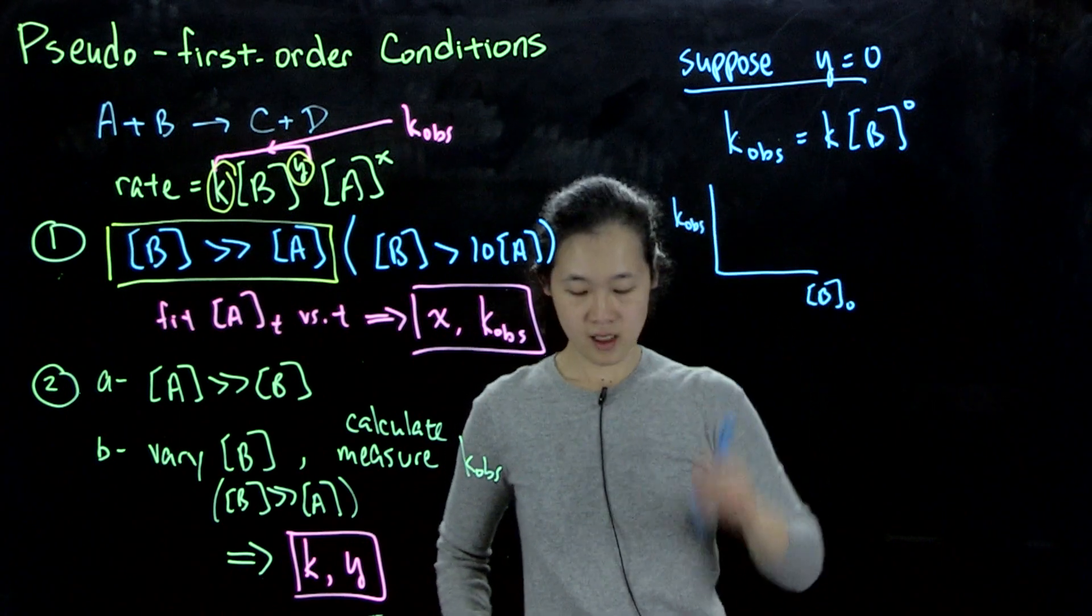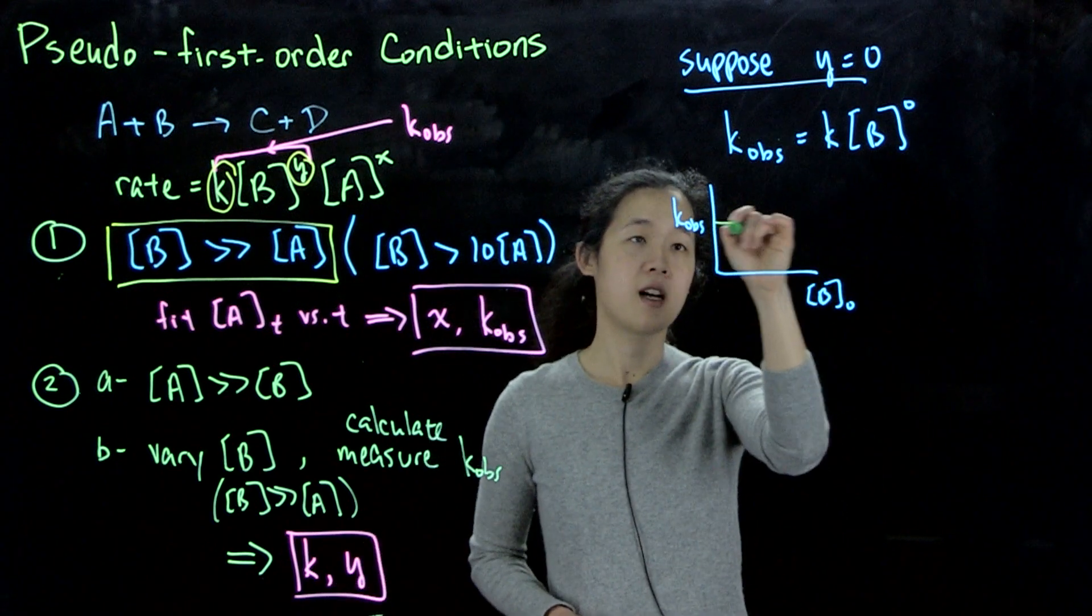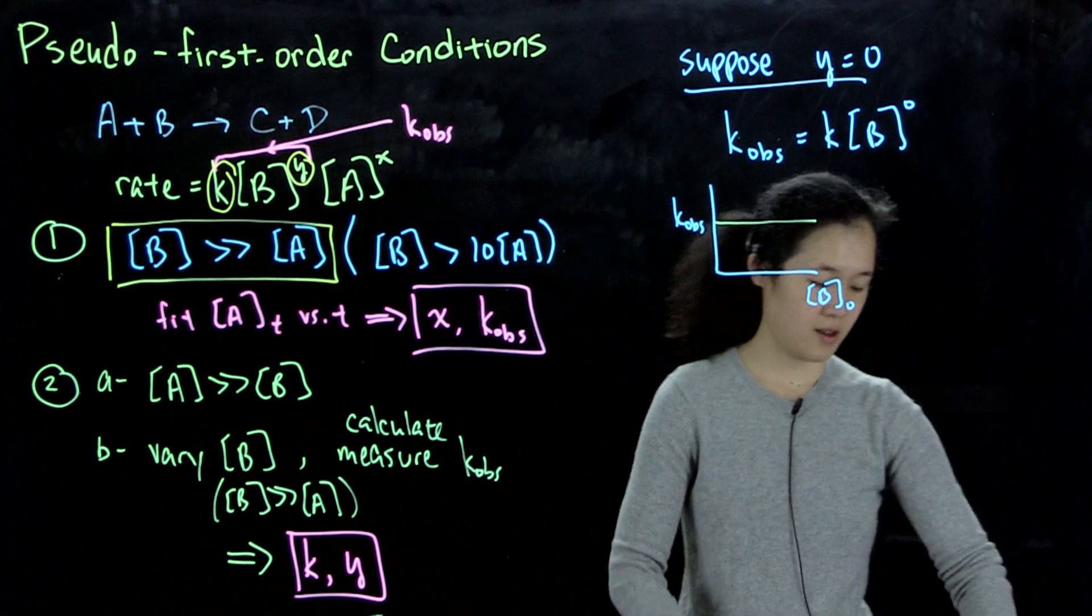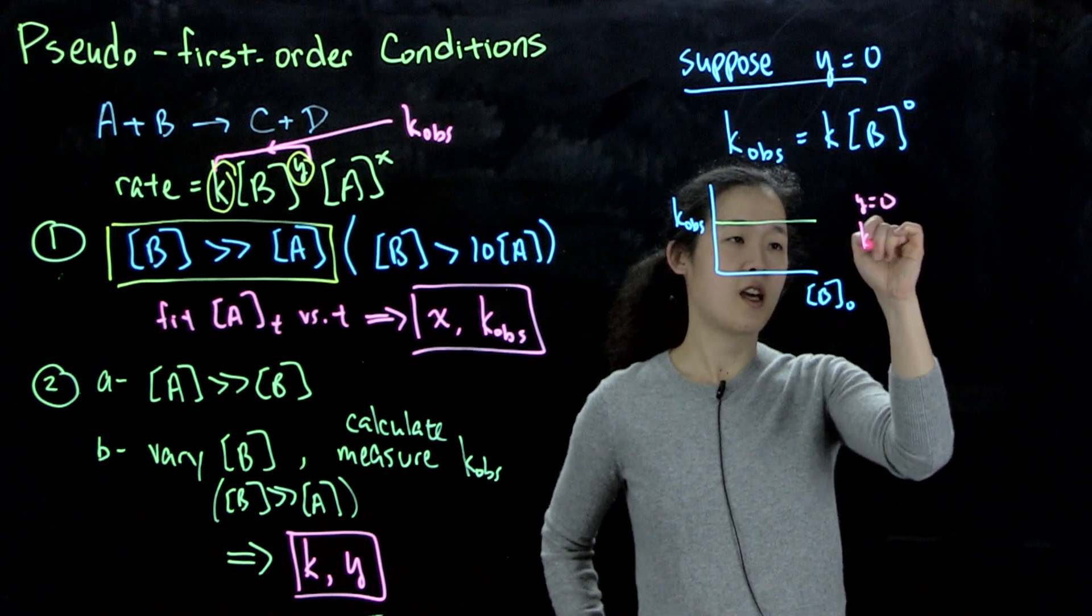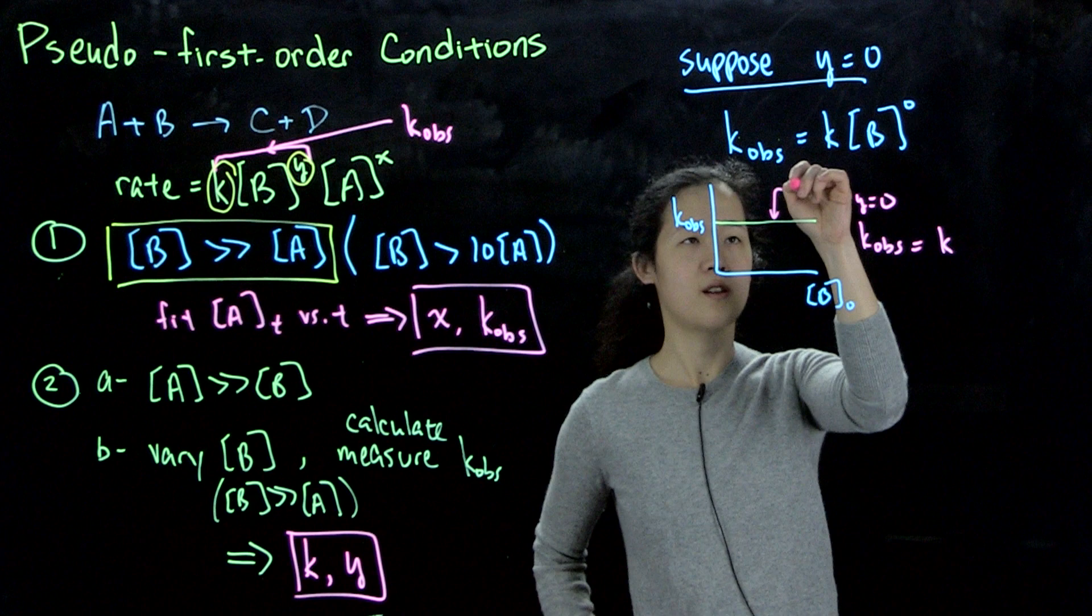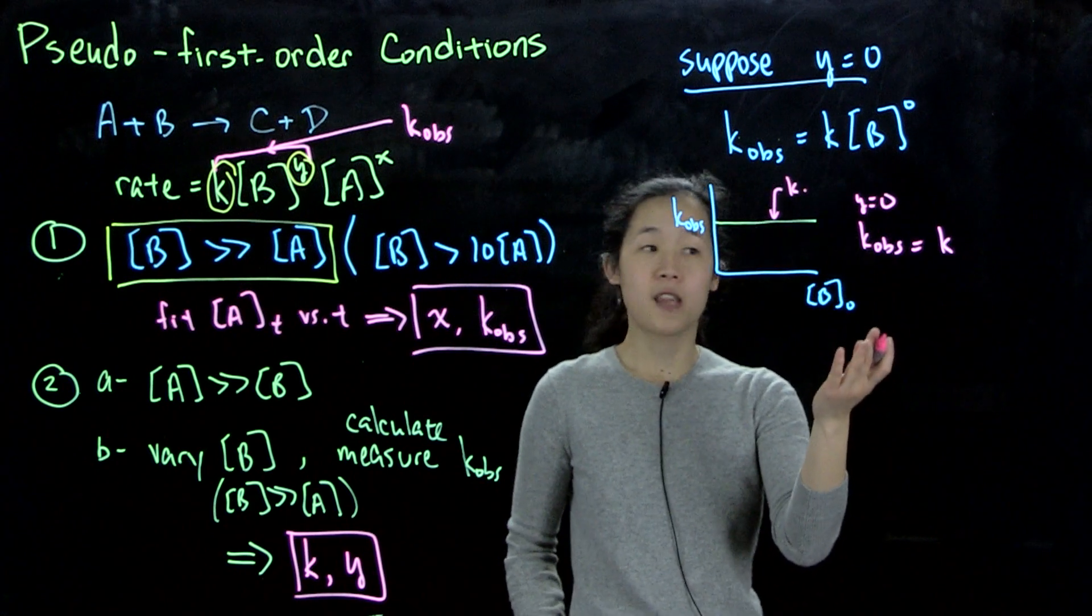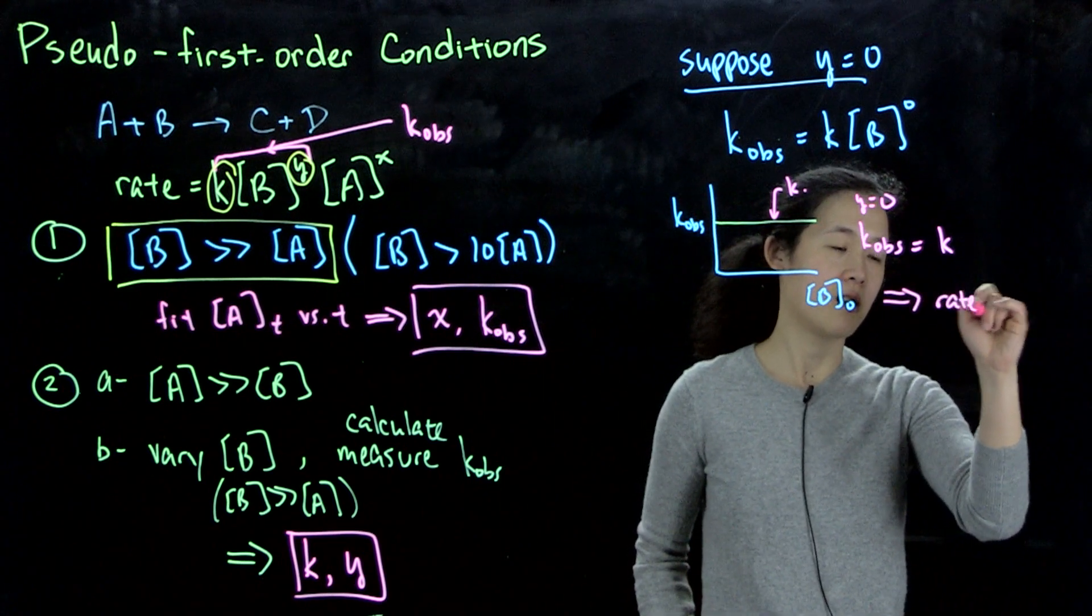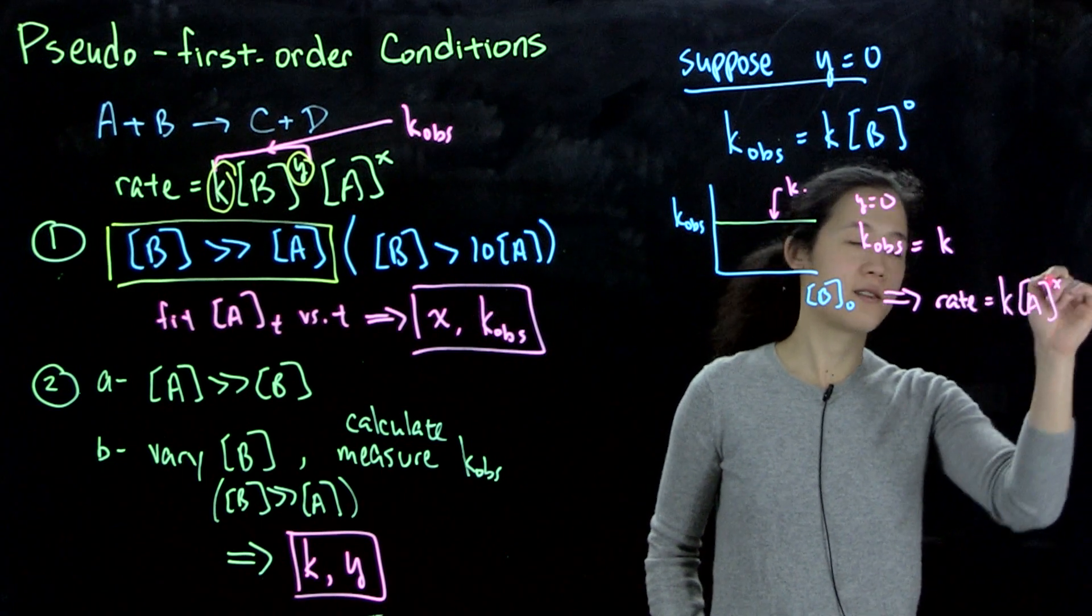So again, y equals 0, k_ob equals k, so this value is k. So that's the easiest. So then our final rate expression would then be rate equals k, a to the x. OK.